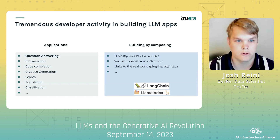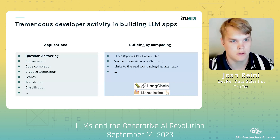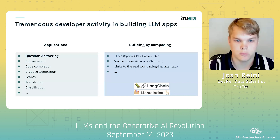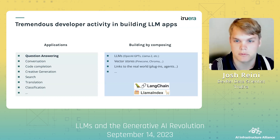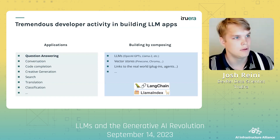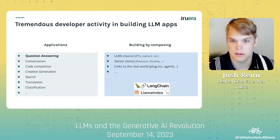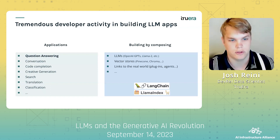Vector stores like Weaviate, Pinecone, or Milvus, and links to the real world, including real-time retrieval from APIs and taking action in the real world to book flights, order groceries, and more. We stitched these applications together using frameworks like LangChain and LlamaIndex, and often in creative ways, such as using query planning.